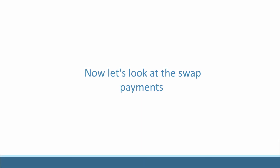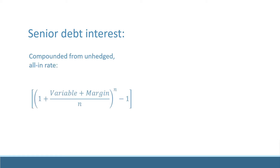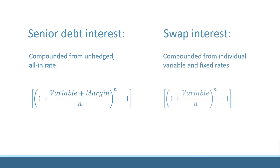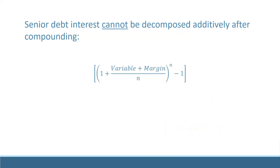Now let's look at the swap payments. To do this, we need to ask what portion of the interest paid on our senior debt is due to variable interest. The problem is our senior debt accrues interest on a base calculated from the all-in rate. The swap, however, is only defined on the variable rate and fixed rates which are compounded separately. We need to approach these calculations carefully.